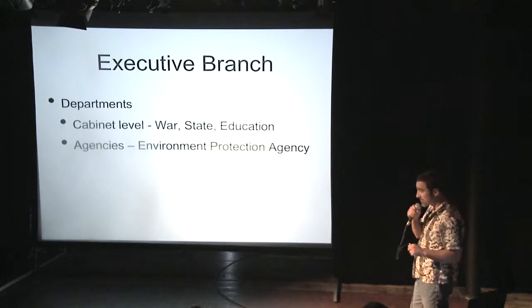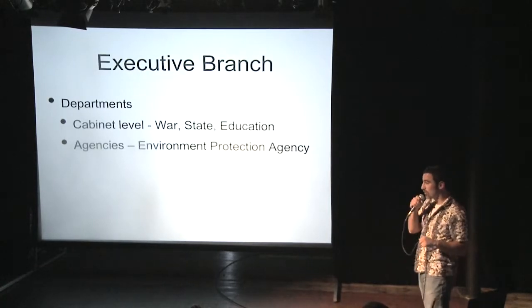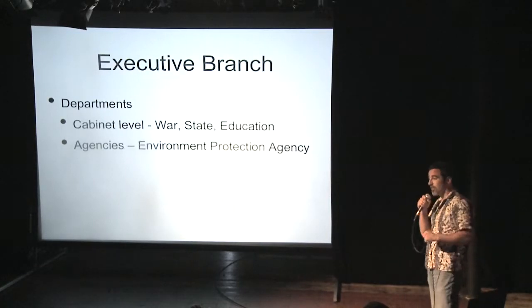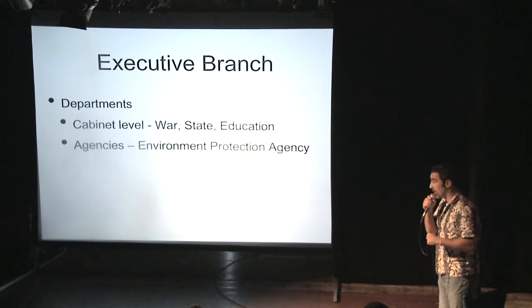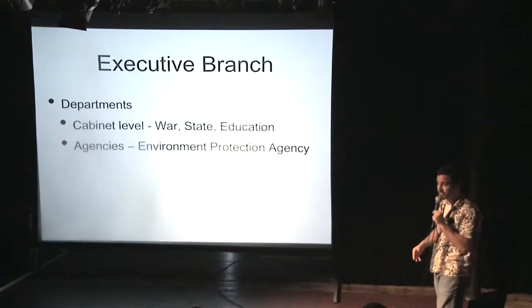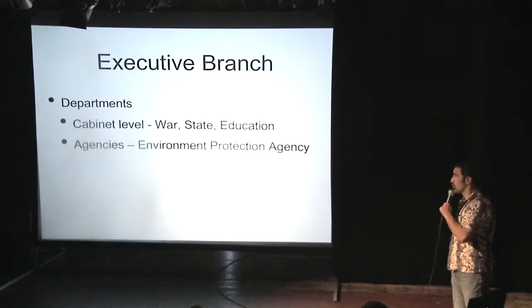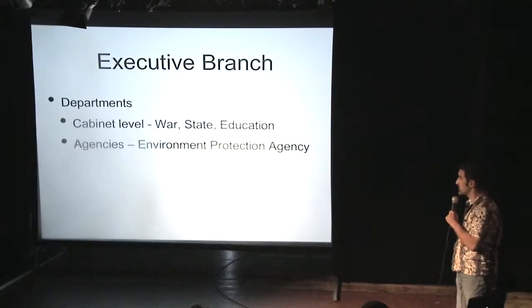The executive branch is in charge of executing the law, making certain what happens. You have departments — at the cabinet level you have war, state, education as examples. And then at the agencies, which are lower, you have the Environmental Protection Agency and other groups along those lines.